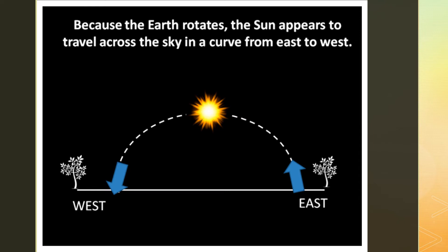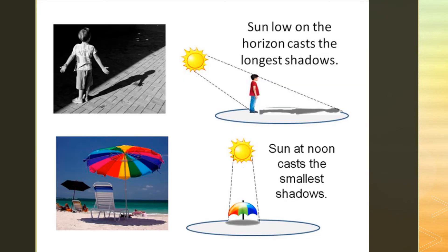Lengths of shadows cast by the sun vary throughout the day. Because the pattern is repeated each day, shadows were used to tell time. This eventually led to the use of the sundial. When the sun is low on the horizon, objects cast long shadows. When the sun is high in the sky, objects cast short shadows.